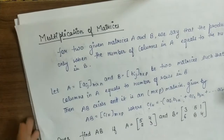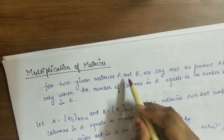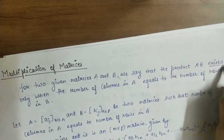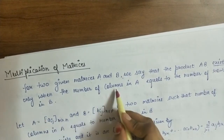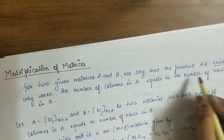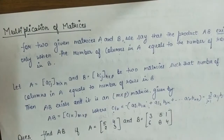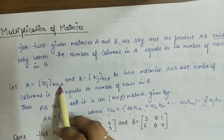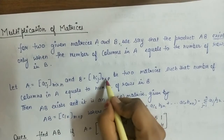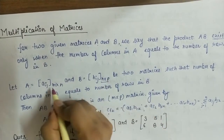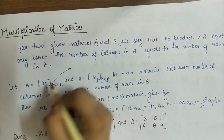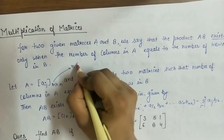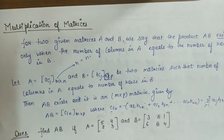Now, multiplication of matrices. For two given matrices A and B, we say that the product AB exists only when the number of columns in A equals the number of rows in B. If A is of order M×N and B is of order N×P, then the number of columns in A equals N and the number of rows in B equals N, so the product exists.